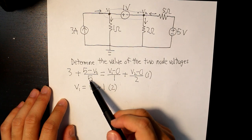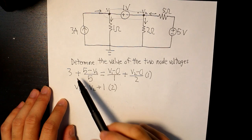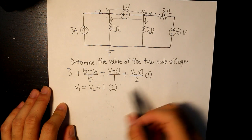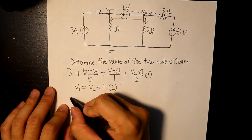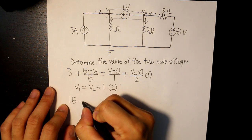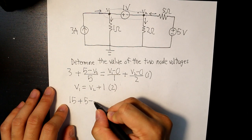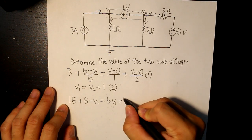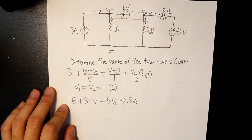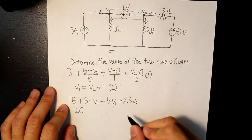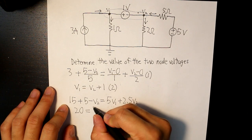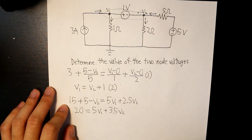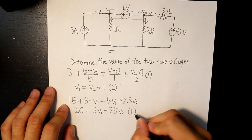Now, let's go back to equation 1 and then factor out the denominator. So we'll multiply 5 from this whole equation. And that would be 15 plus 5 minus V2 is equal to 5V1 plus 2.5V2. And then we simplify all of the terms. And now we are left with this new equation 1.